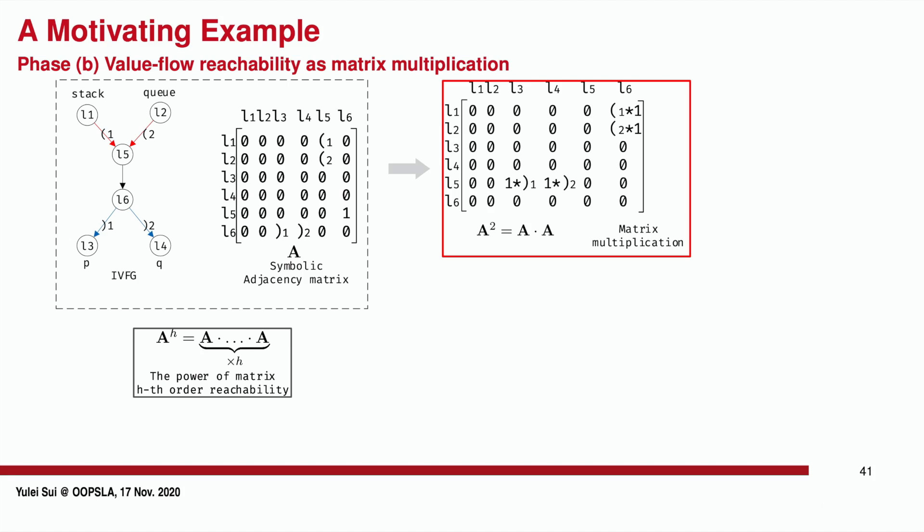For example, A to the power of 2 represents value flow reachability between any two nodes with a path length of 2. More specifically, the element at the first row and sixth column of A-squared represents a path of length 2 from line 1 to line 6.